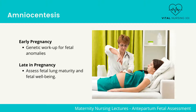Reasons why an amniocentesis is done include the following: for a genetic workup for fetal anomalies — for example, Down syndrome and Trisomy 18 can be identified early — and to detect neural tube defects. Note that an early amniocentesis is performed at 14 to 16 weeks.